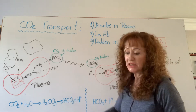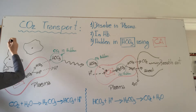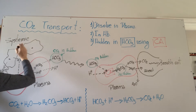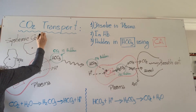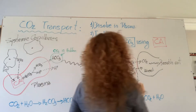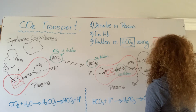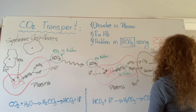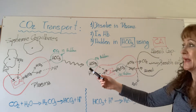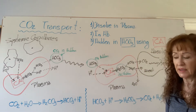This one represents the tissue, or the systemic capillaries. These are the systemic capillaries, because it's where carbon dioxide is produced. This other graphic represents the alveoli capillaries. The systemic capillaries — I started over here because it's where carbon dioxide is produced.